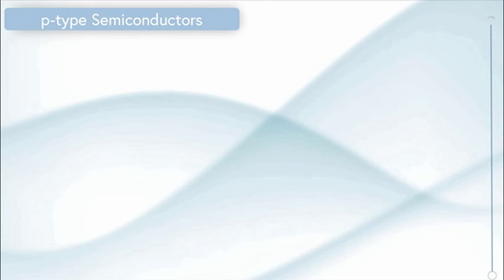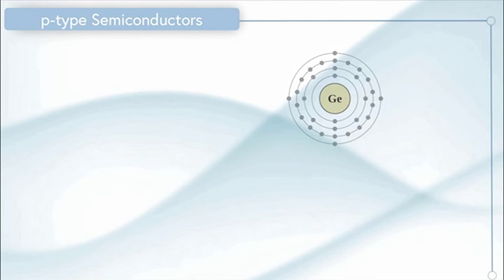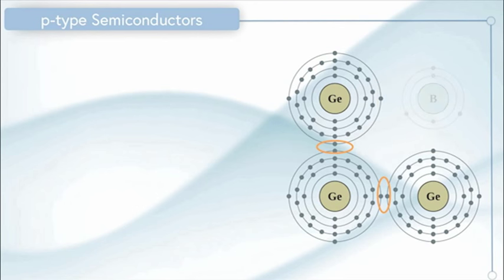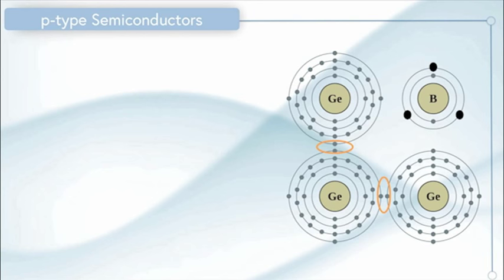P-type semiconductors work in an opposite way. You'll see what this means in a moment. This time, here's my germanium atoms with my electrons. And what I'm going to do is remove one germanium and replace it with something else. In this case, I've chosen boron. Boron only has three electrons in the outer shell. What does this mean? The material is now more positive.